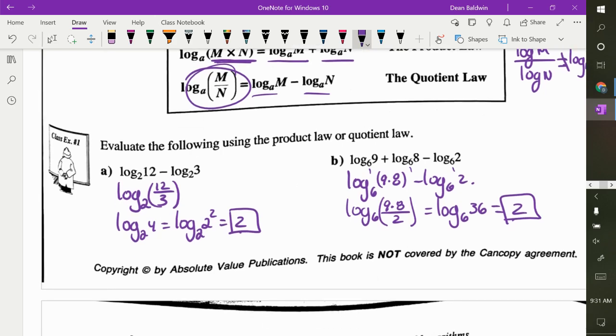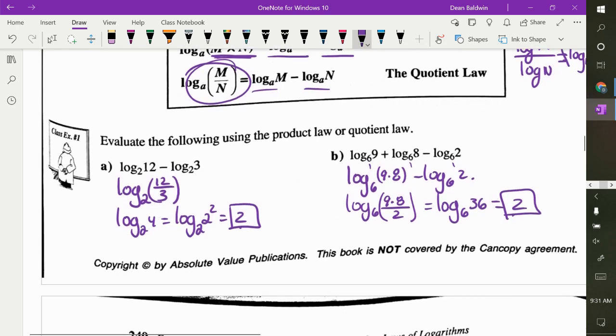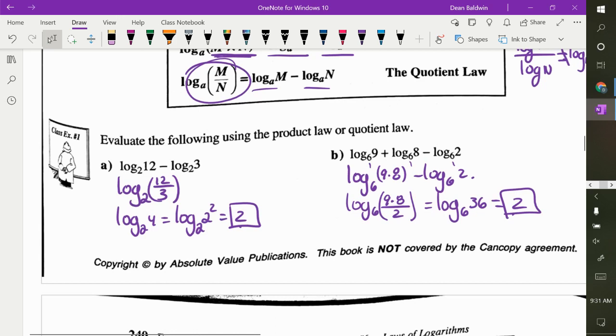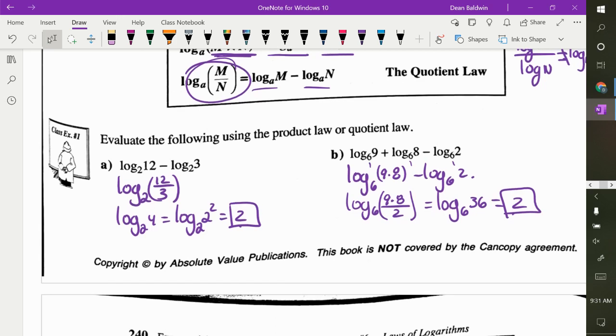Or you can just know that whenever you are subtracting a log, that argument will go to the denominator. And then you just simplify this. What's 9 times 8? 72. 8 divided by 2? 4. What does that equal? 2, right? Because 6 squared is 36.